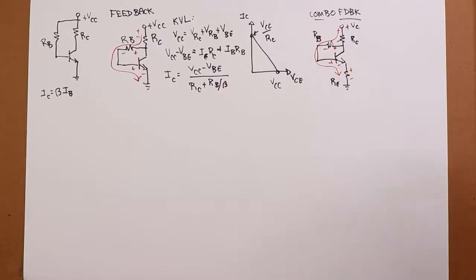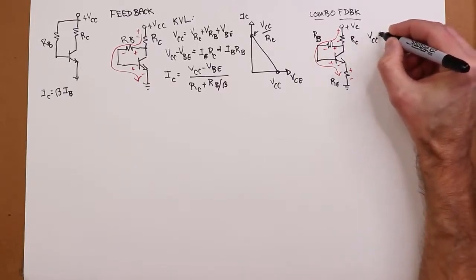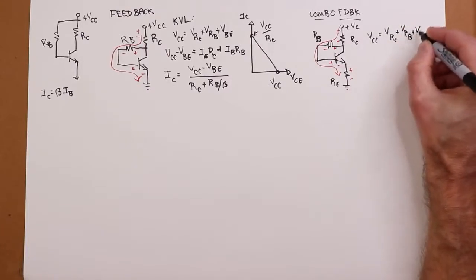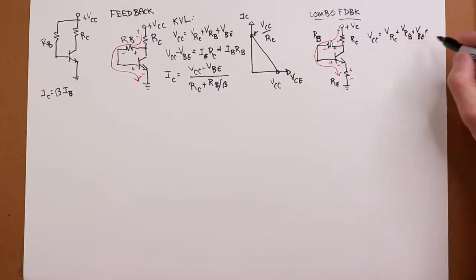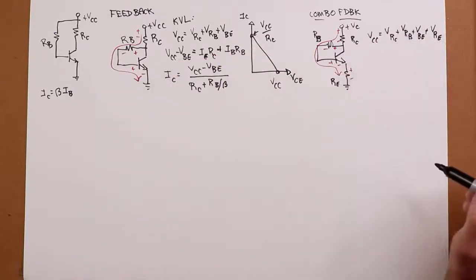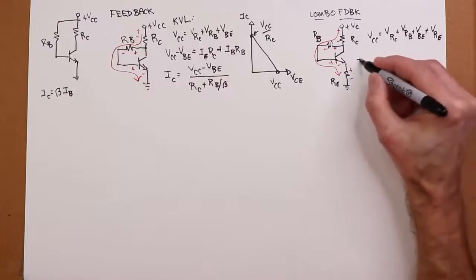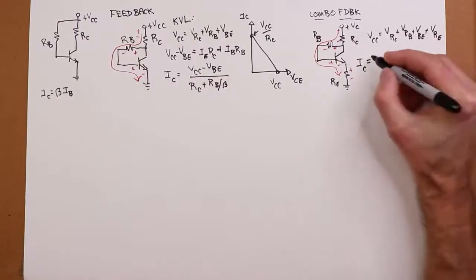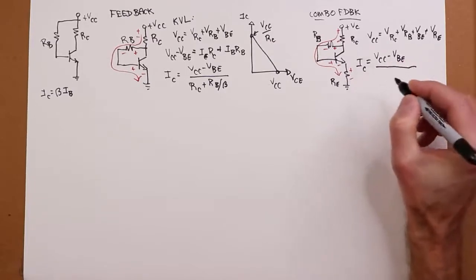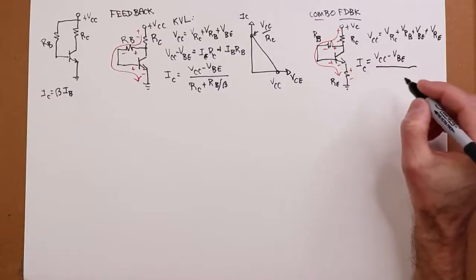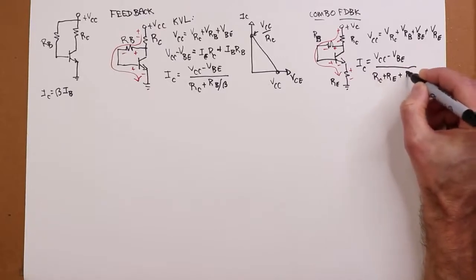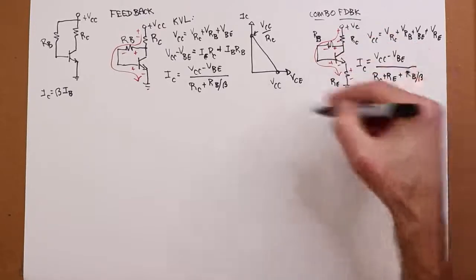So when we derive the equation for this, Vcc is going to be VRC plus VRB plus VBE plus VRE. And if we then do the same thing, write these in terms of the Ohm's law equivalents, we come up with a formula for IC. I'll skip the intermediate step. And in the denominator, we have this extra term.